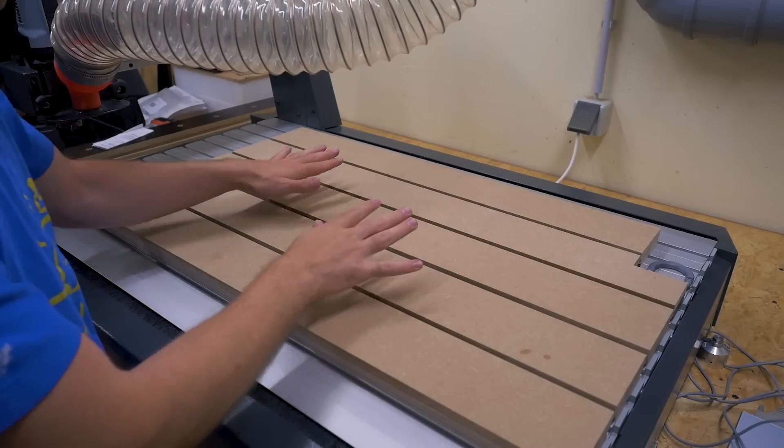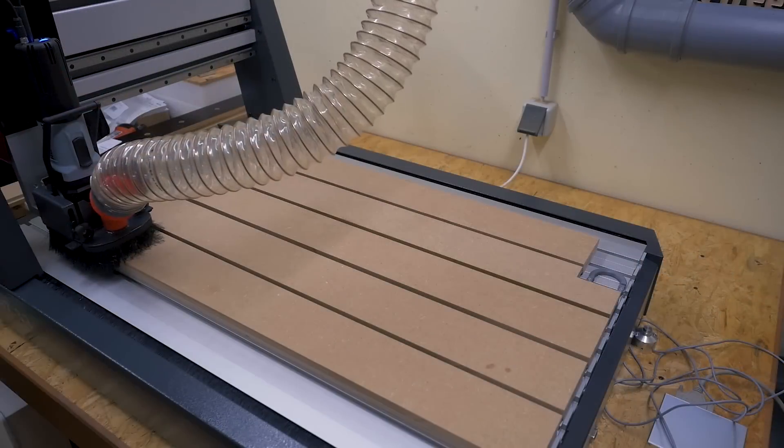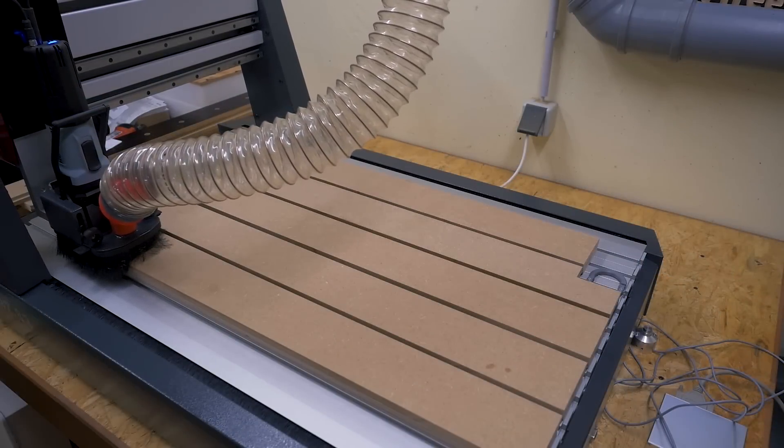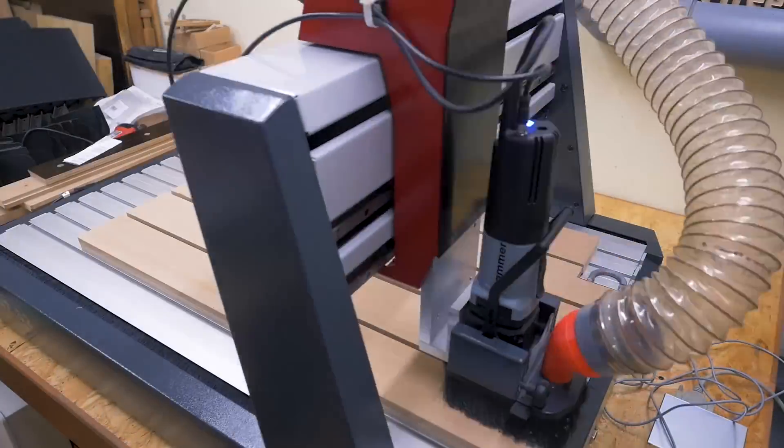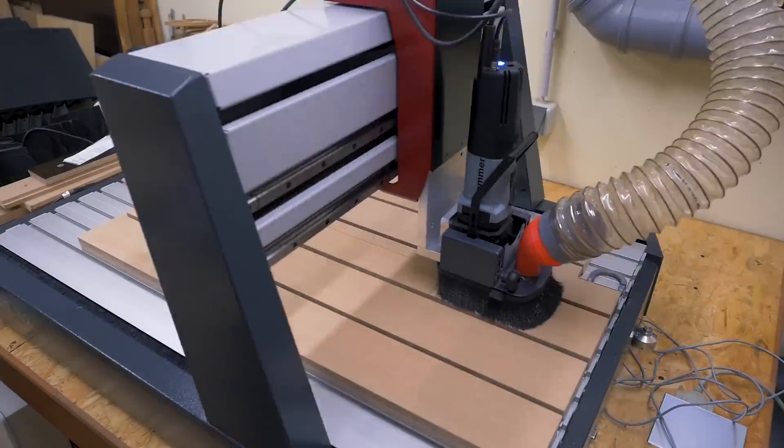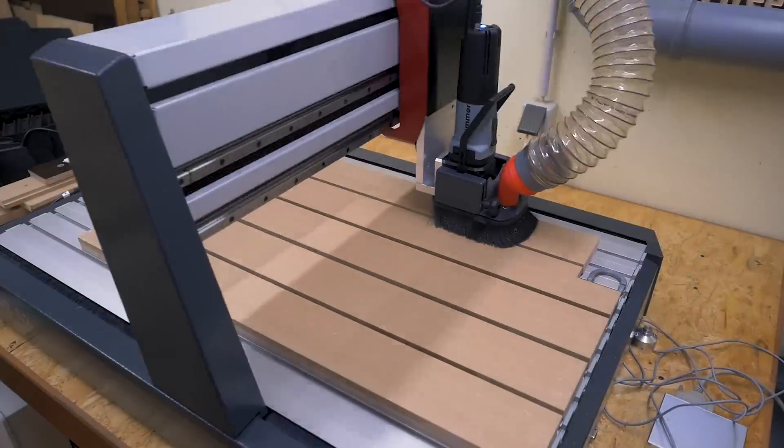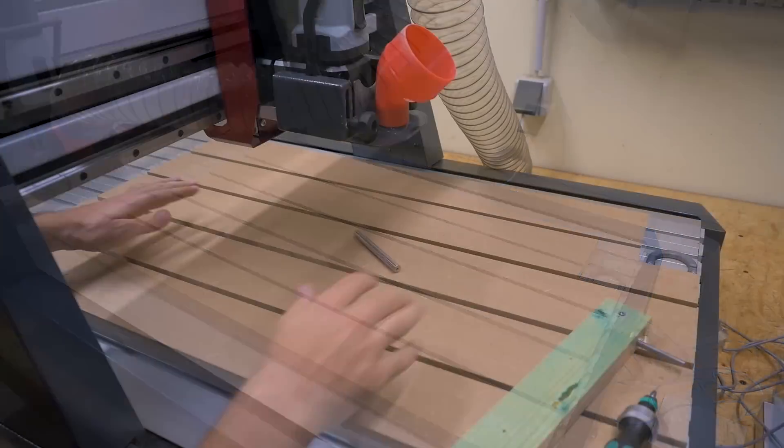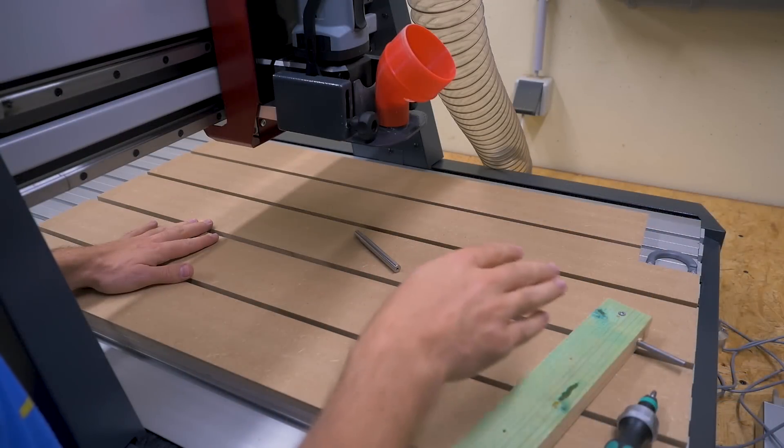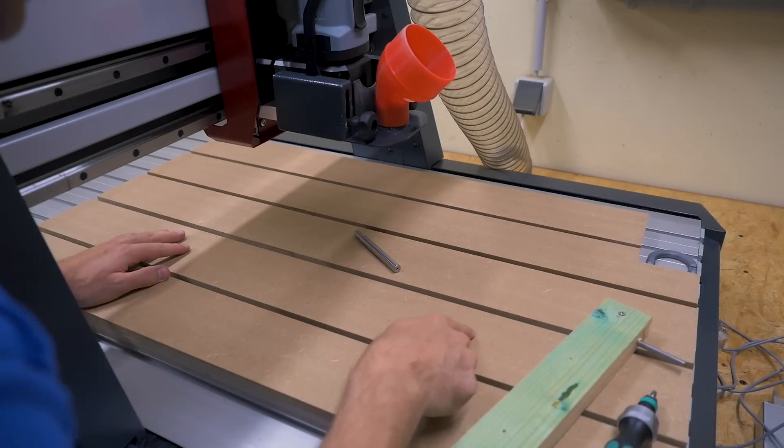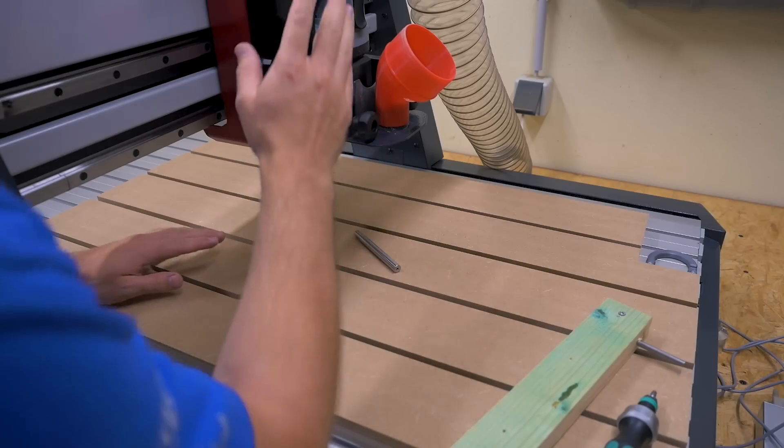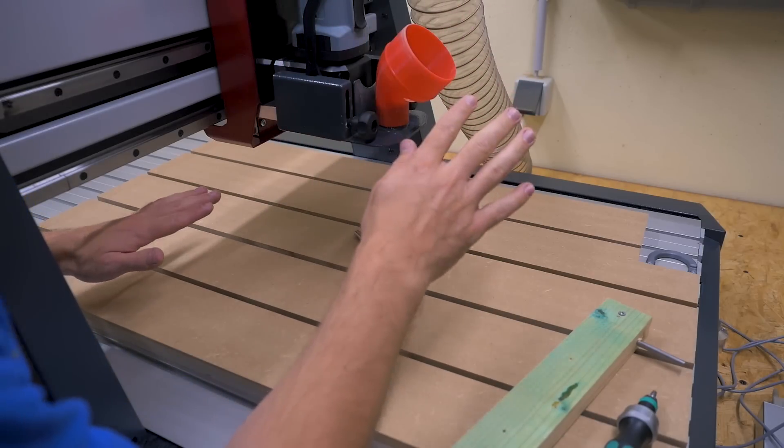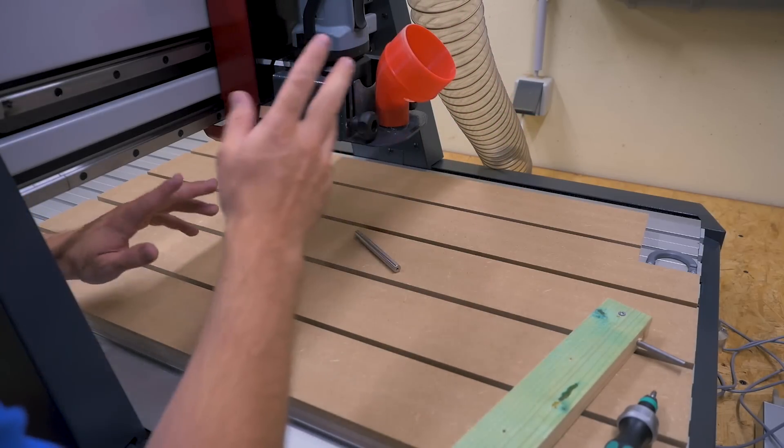The MDF is glued on, now I need to surface that. Okay, flattening is done. I think it's hard to see on video but there are still some visible lines which means that the spindle is not perfectly aligned to the machine bed yet and I need to tram it again.